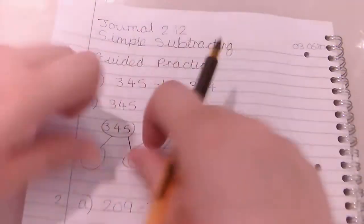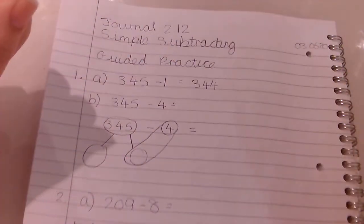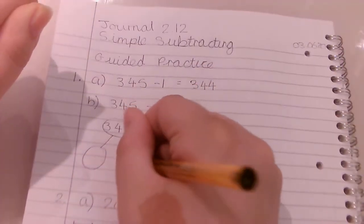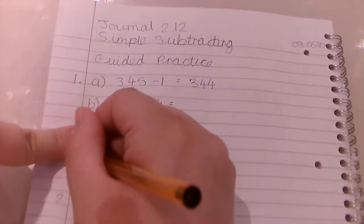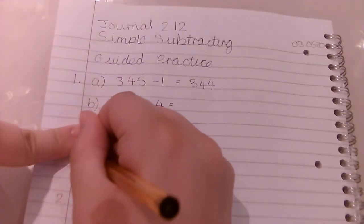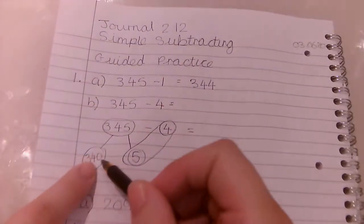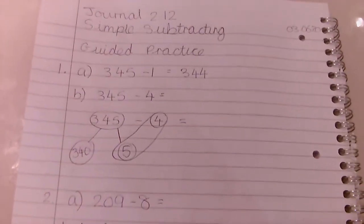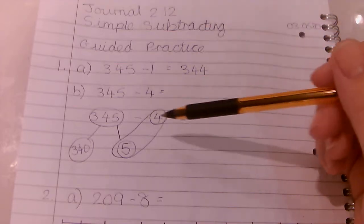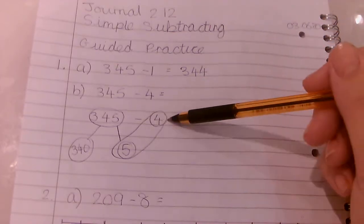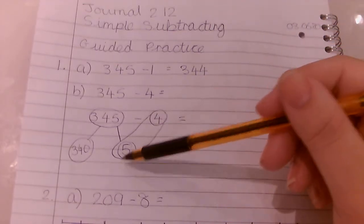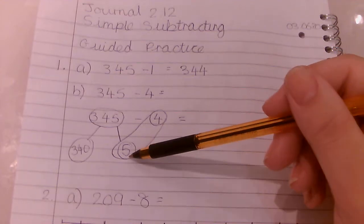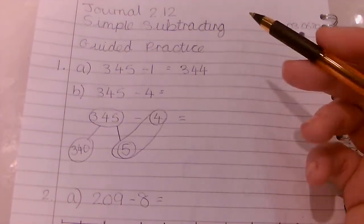We're going to pull apart the ones which is 5 and leave the hundreds and tens alone. So that's 340, make sure you put the placeholder there so you don't think it's 34 because that's a very different number. Okay, now we can look at 5 take away 4. Remember it's not going to be 4 take away 5, it always has to be the bigger number first. 5 take away 4 is 1.